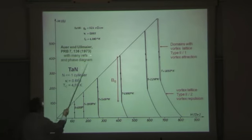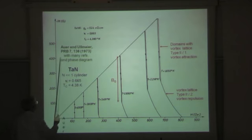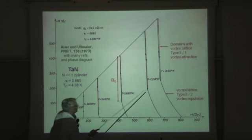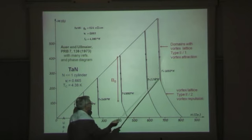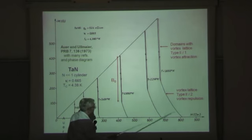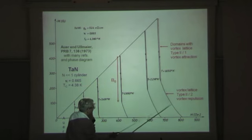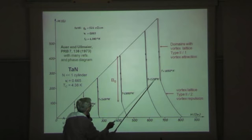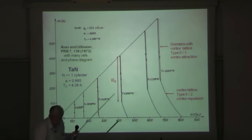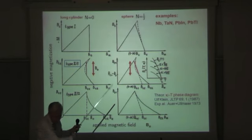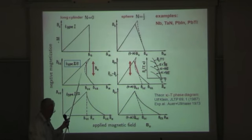There were measurements already in 1973. This is a sort of review where in the system tantalum-nitrogen one observed both. This is called now type 2.1, when you have this vortex attraction, and here you have vortex repulsion. Both types of behavior are observed in the same material at various temperatures. This is well confirmed by experiment and was already known 30 years ago.